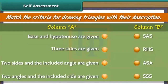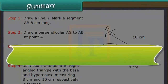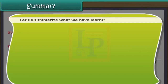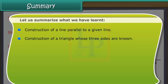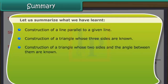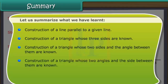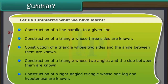Self-assessment: Match the criteria for drawing triangles with their description. In summary, we have learned: construction of a line parallel to a given line; construction of a triangle whose three sides are known; construction of a triangle whose two sides and the angle between them are known; construction of a triangle whose two angles and the side between them are known; and construction of a right angled triangle whose one leg and hypotenuse are known.